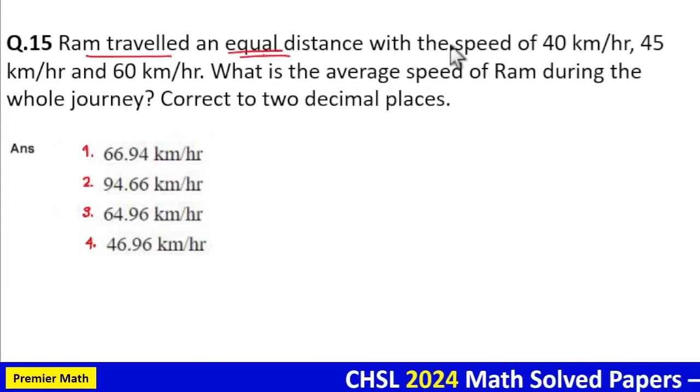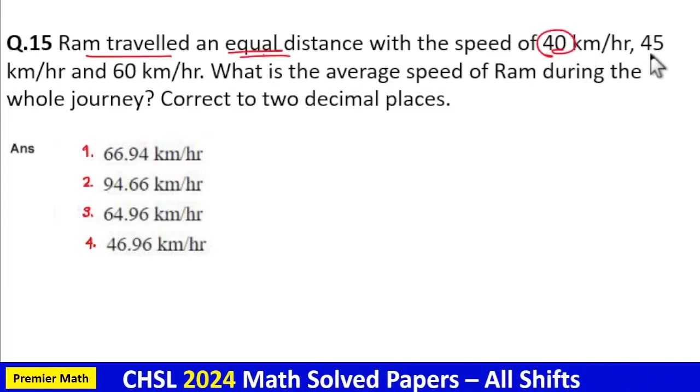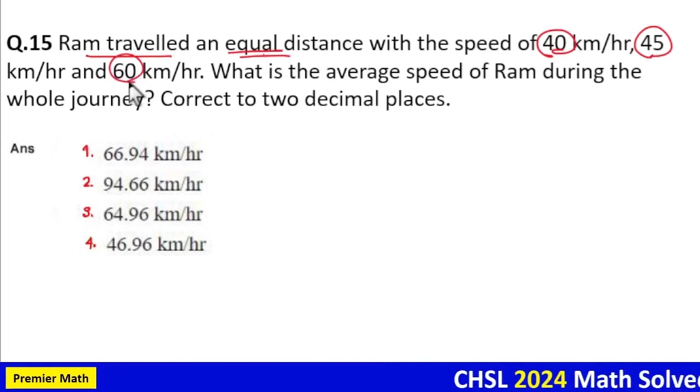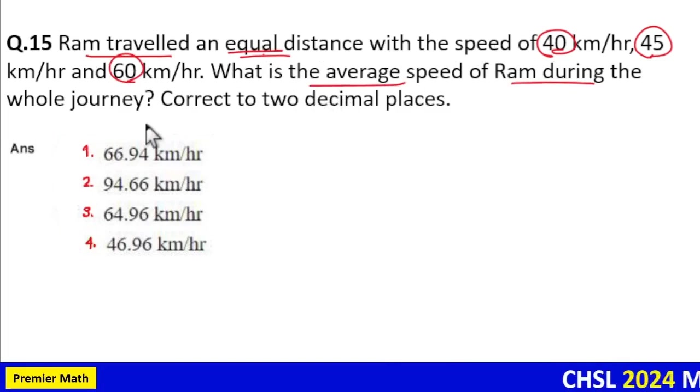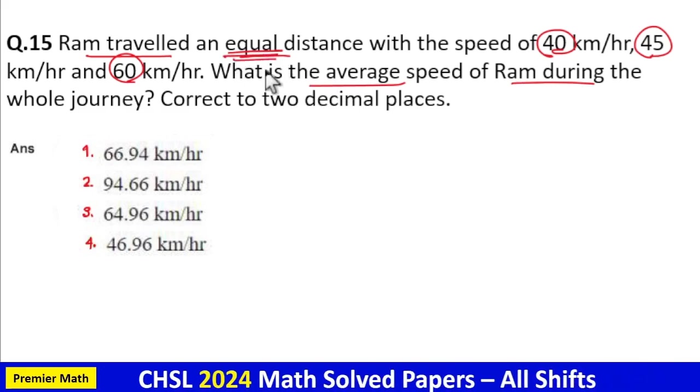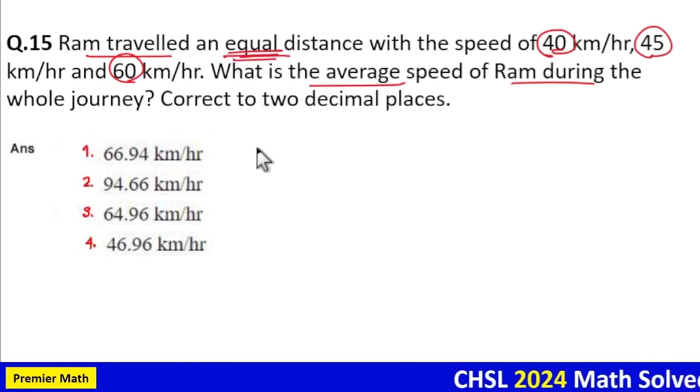Ram traveled an equal distance with the speed of 40 kilometer per hour, 45 kilometer per hour, and 60 kilometer per hour. What is the average speed of Ram during the whole journey? Here distance is equal. Now take the LCM.